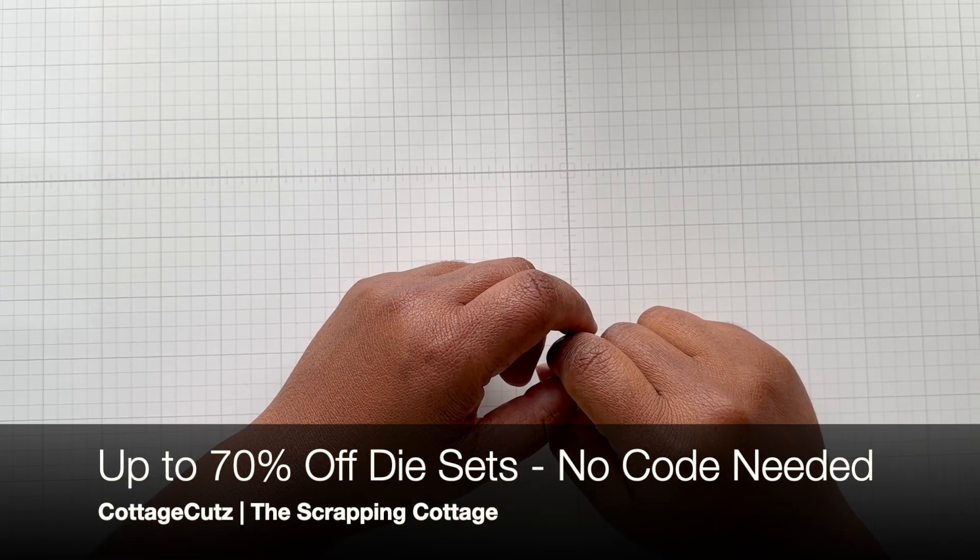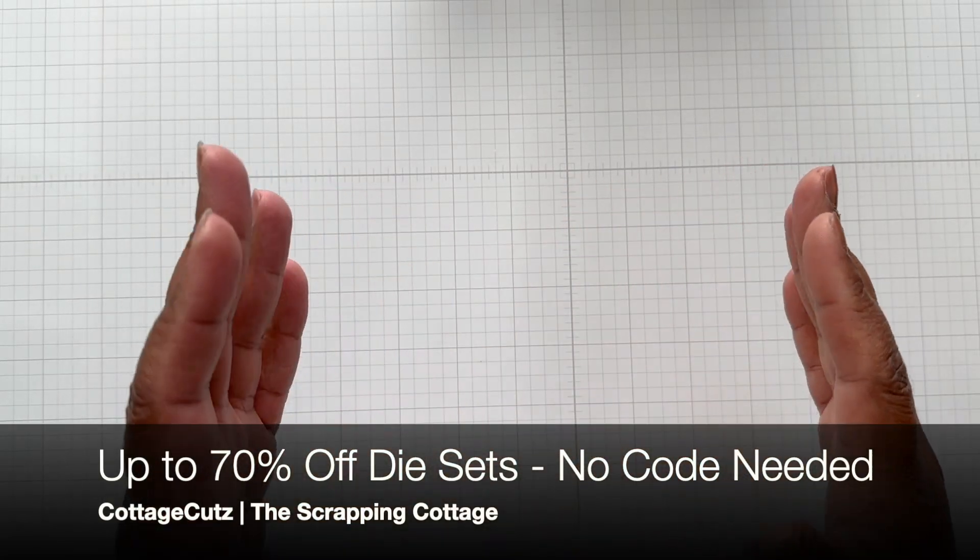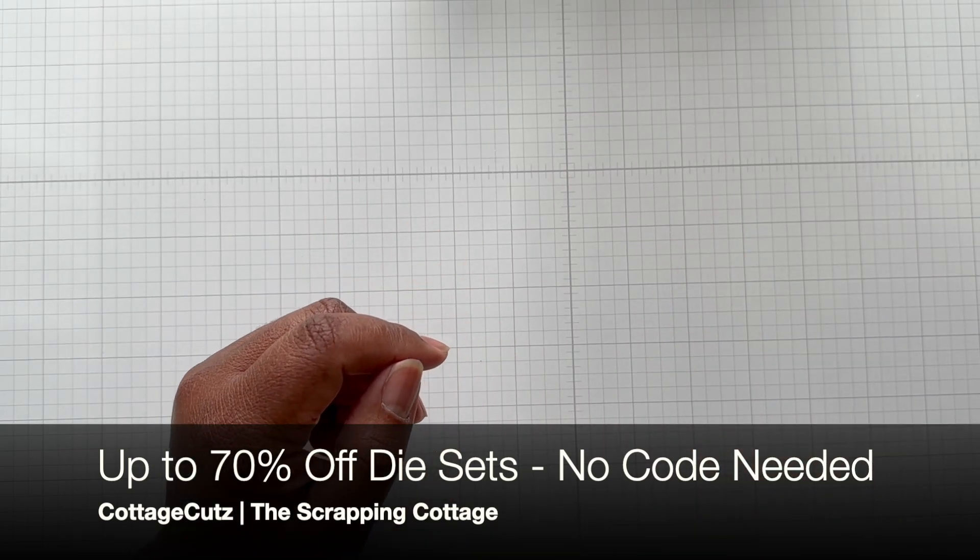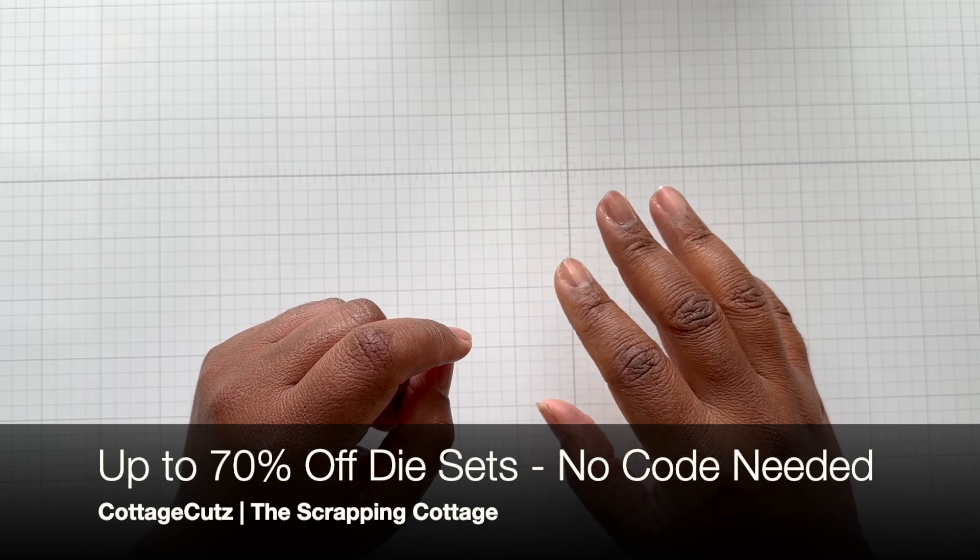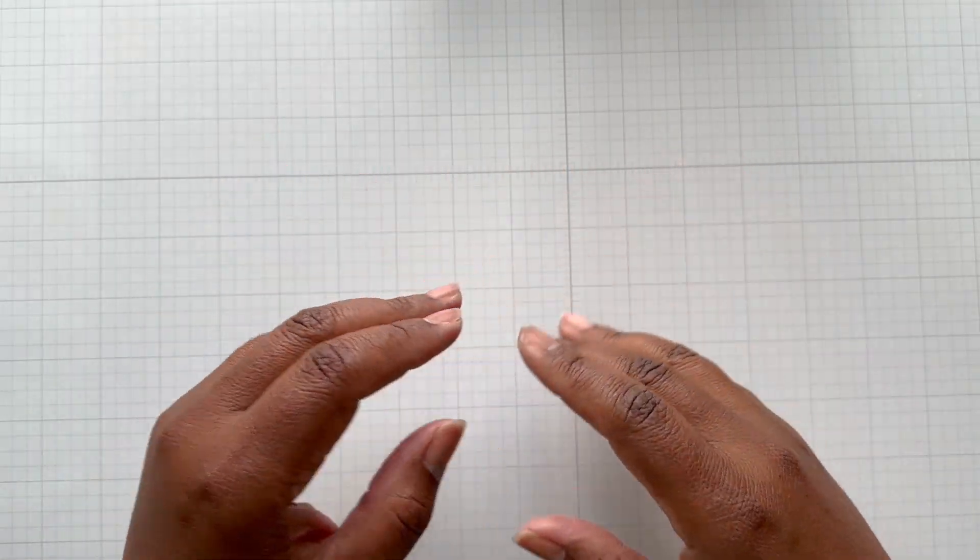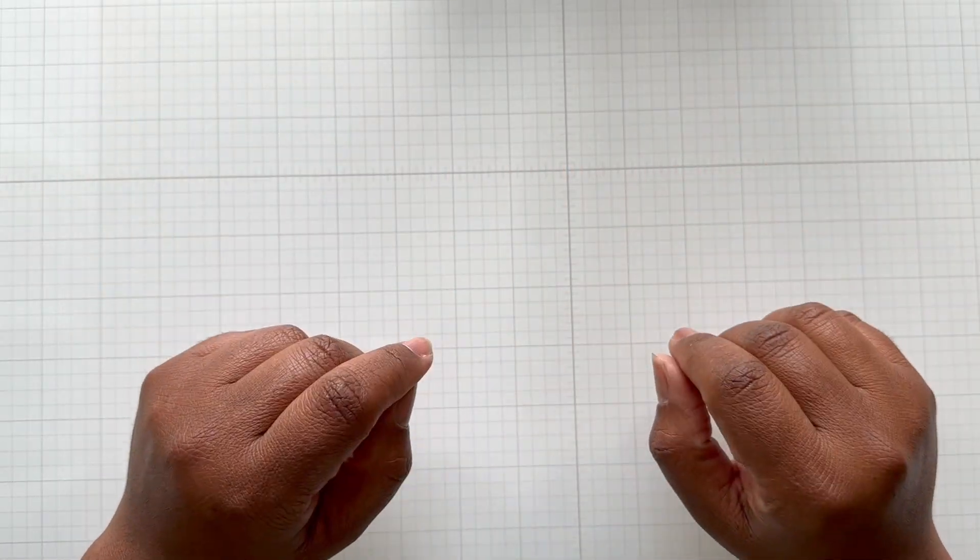Cottage Cuts. Get up to 70% off dies. And it's a whole section. So I will put a direct link for their die section. There's a lot of new dies. So it's up to 70, not all 70. Gingerbread is in there. Go take a peek. Definitely worth taking a look at.